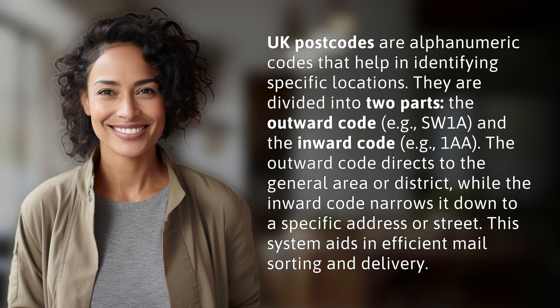UK postcodes are alphanumeric codes that help in identifying specific locations. They are divided into two parts: the outward code, e.g. SW1A, and the inward code, e.g. 1AA. The outward code directs to the general area or district, while the inward code narrows it down to a specific address or street.